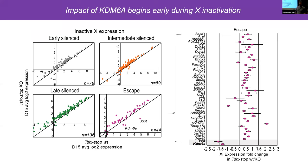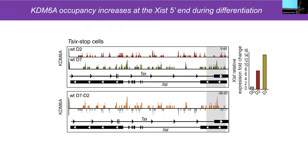Altogether, this suggests that the effects of KDM6A knockout on expression from the inactive X begin at early stages, further supporting a role for KDM6A in the initiation of X inactivation. Because the effects on XIST expression could be indirect or direct, we investigated changes in KDM6A occupancy using CUT&RUN. Looking at the 5' end of XIST, we can see an increase in KDM6A binding at day 7 compared to day 2 of differentiation, correlating with a jump from 6-fold to 14-fold XIST expression in wild-type cells.